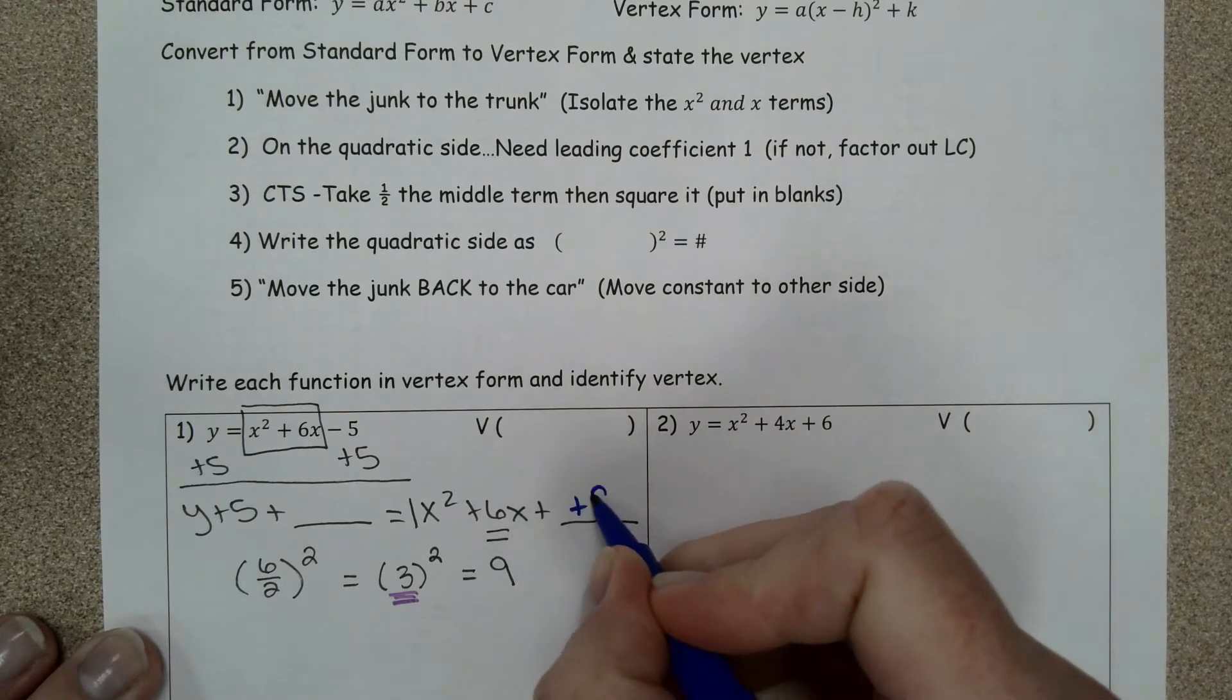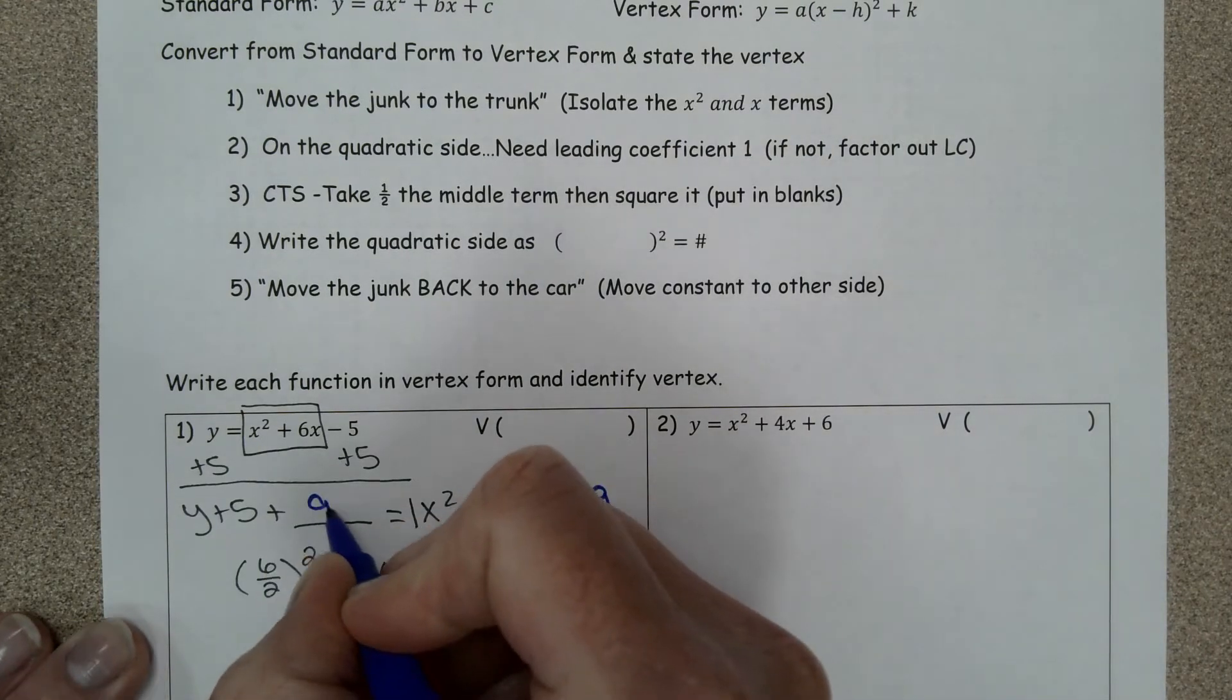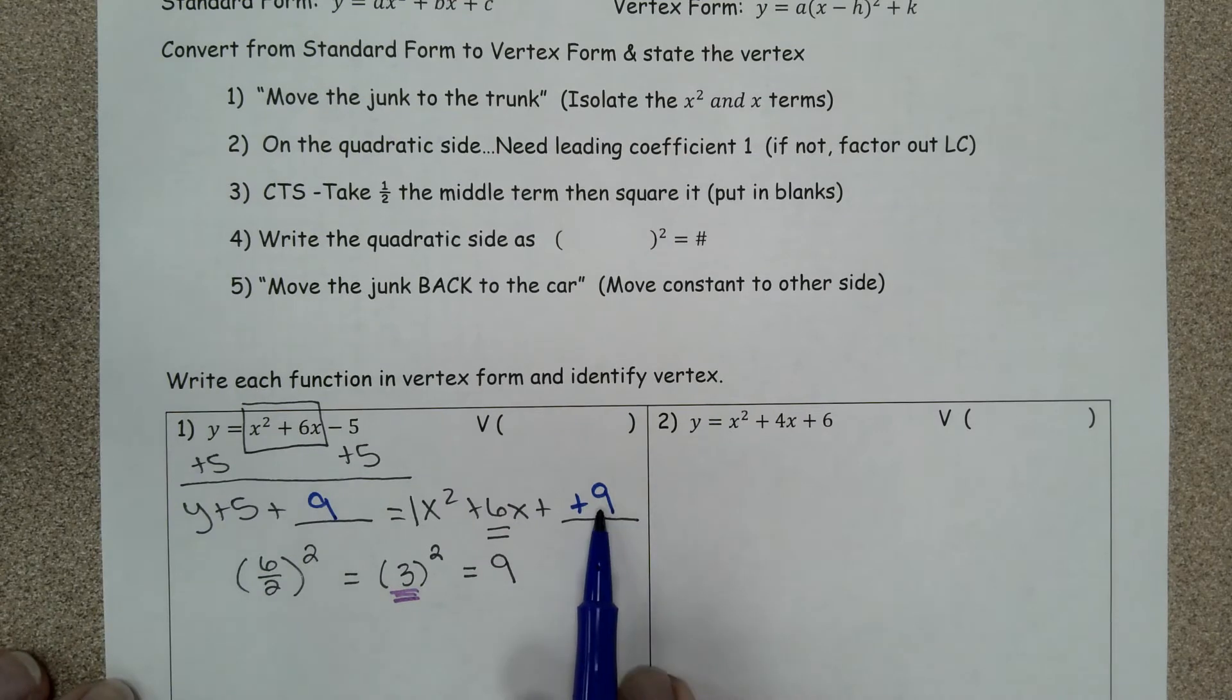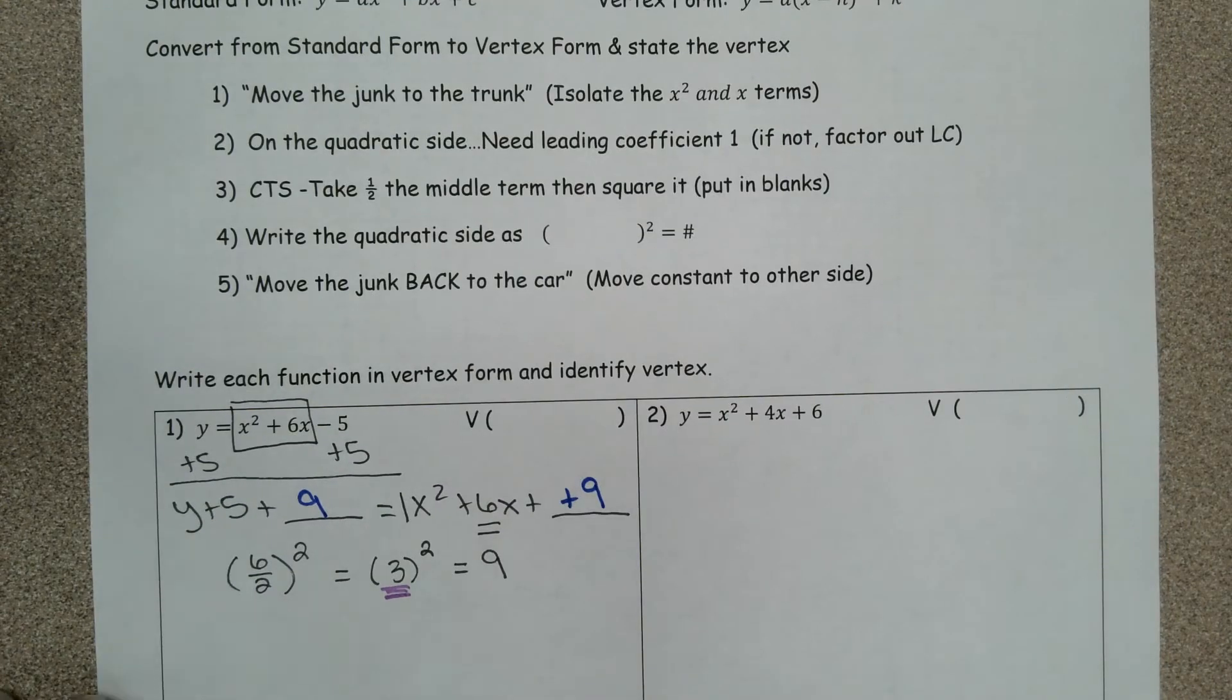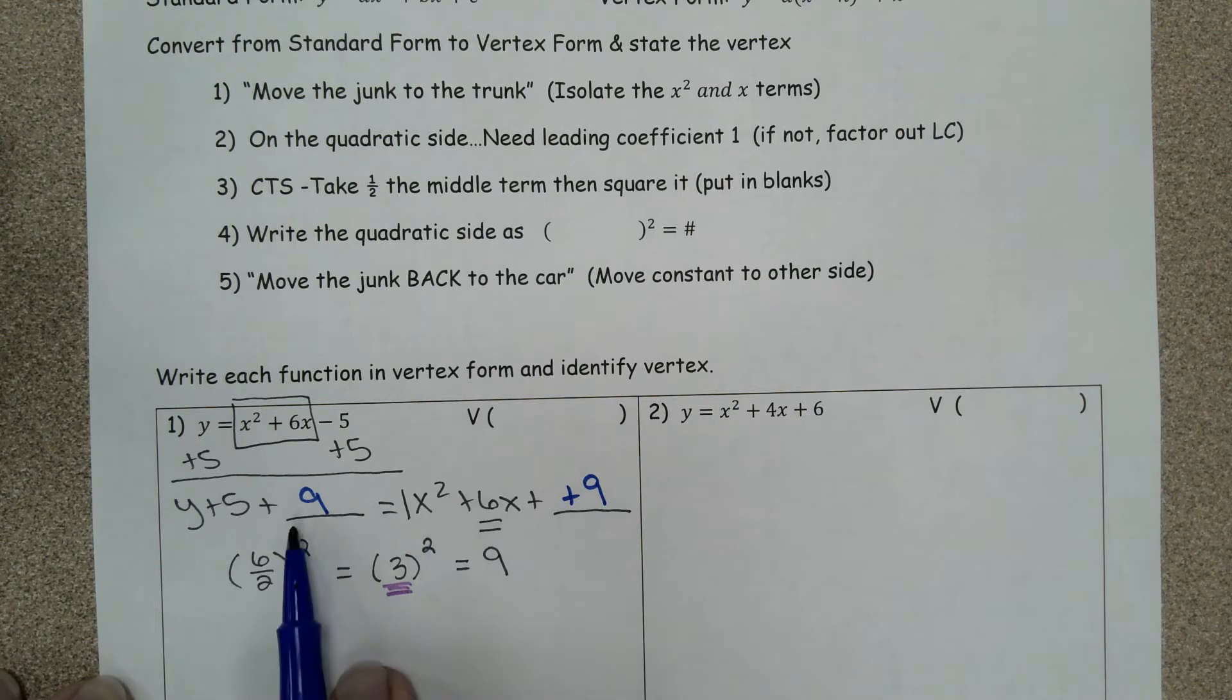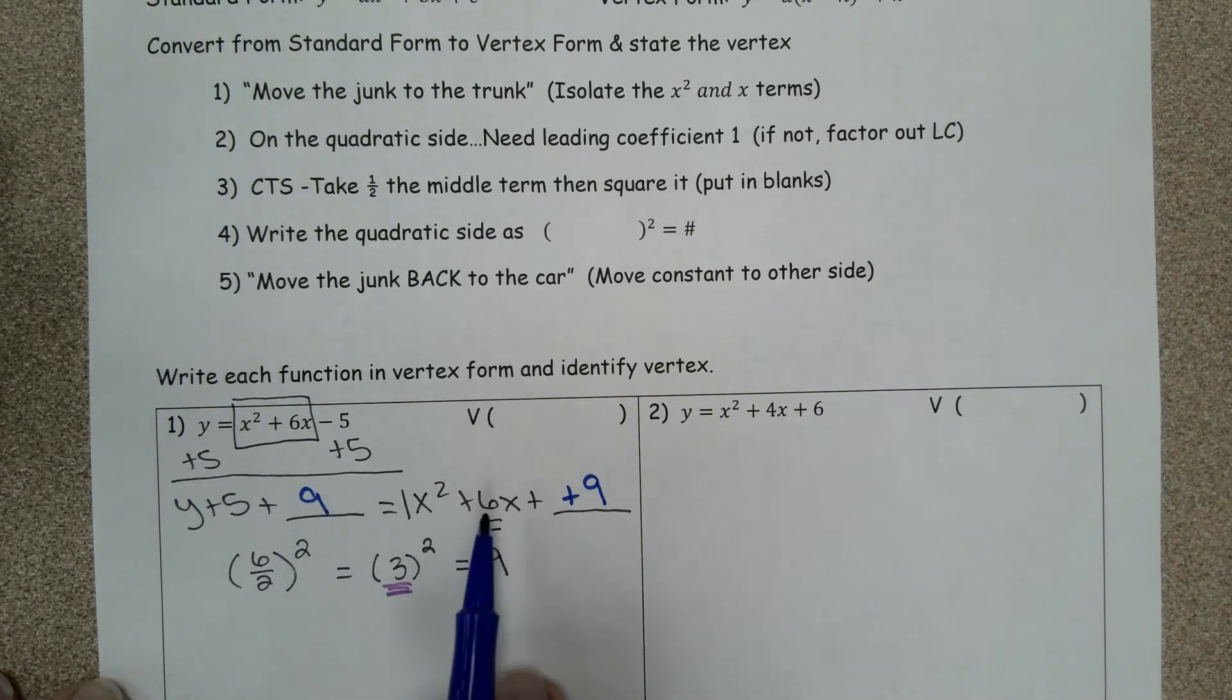I want to add nine, nine to both sides. So nine is the value that completes the square. This is an equation, there's this property of equality that says as long as you add the same number to both sides you can do that.